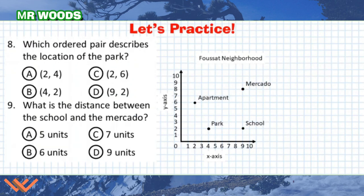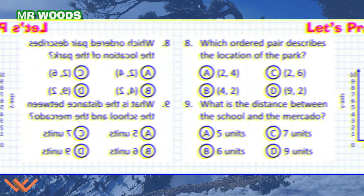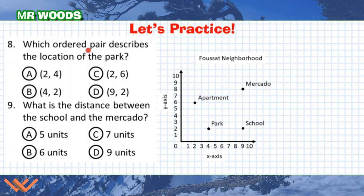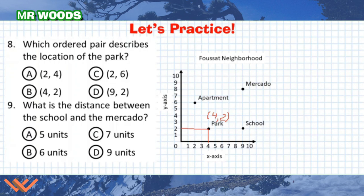This is where I want you to pause the video and practice. Take a moment to look at this, come up with your answers — whether it's A, B, C, or D for number 8, or A, B, C, D for number 9. Number 8 asks which ordered pair describes the location of the park. Number 9 asks about distance — is it 5 units, 6 units, 7 units, or 9 units?